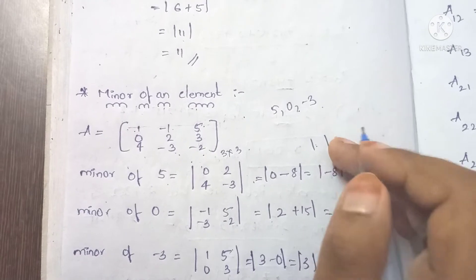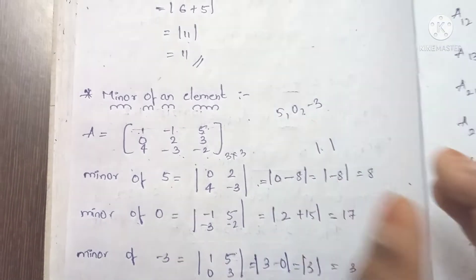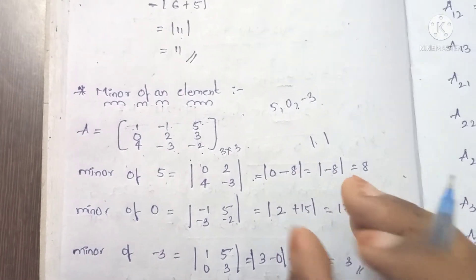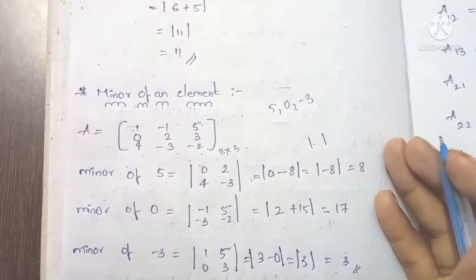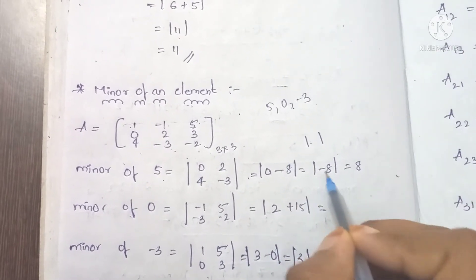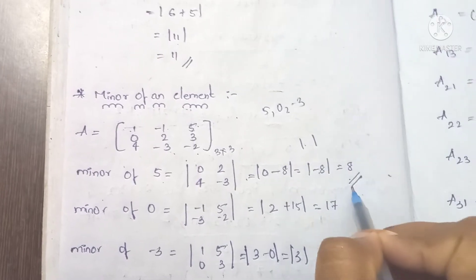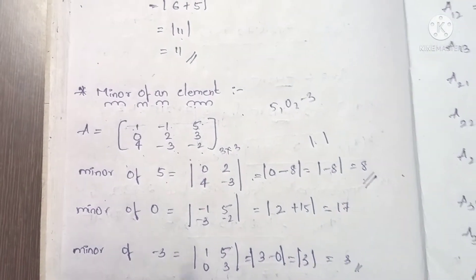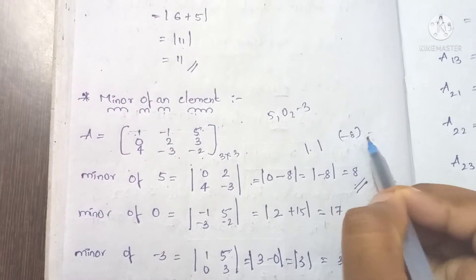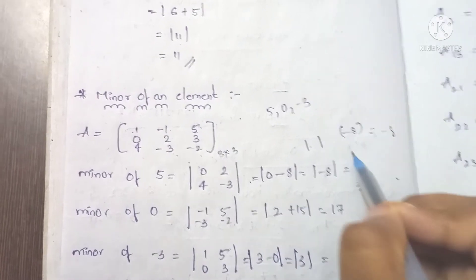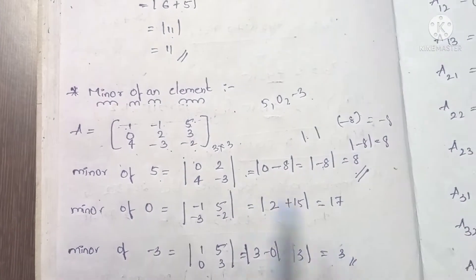Note: a minor is a determinant value. In a matrix, if the result is minus 8, it stays minus 8. But in the context of determinants, the absolute value or sign convention may apply. Here the determinant value is -8, but the minor value is 8 in absolute terms. The sign matters: minus into minus is plus, so -8 becomes 8.